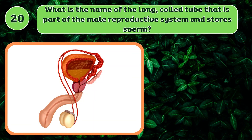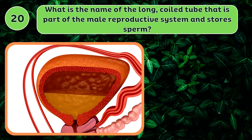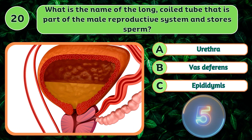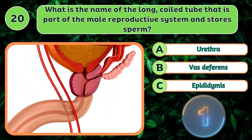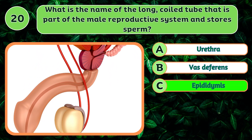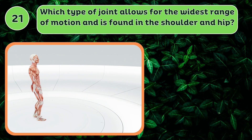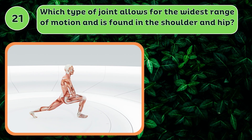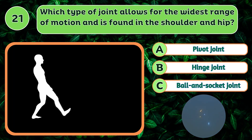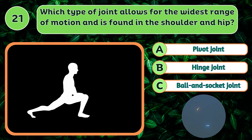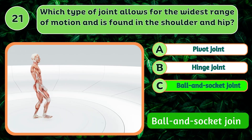Which structure is part of the male reproductive system and stores sperm? Epididymis. Which type of joint allows for the widest range of motion and is found in the shoulder and hip? Ball and socket joint.